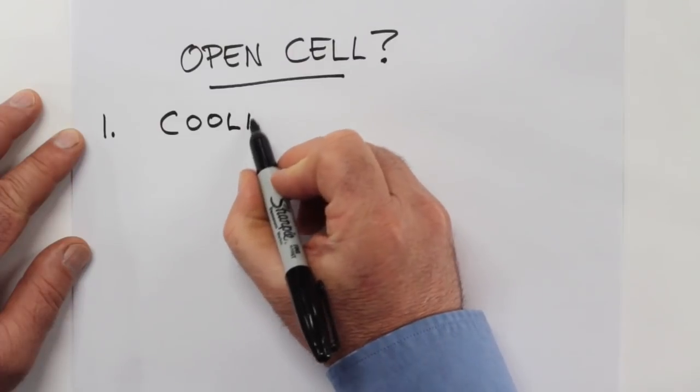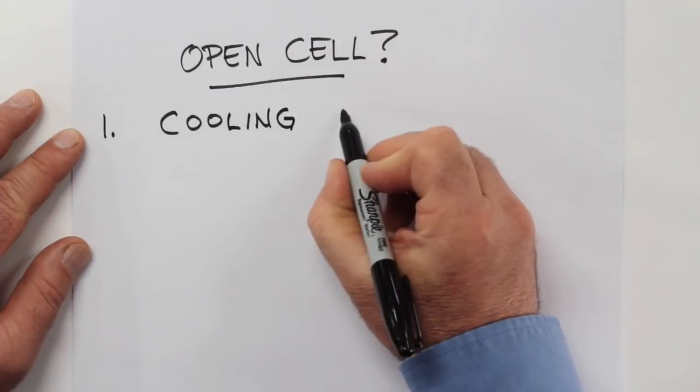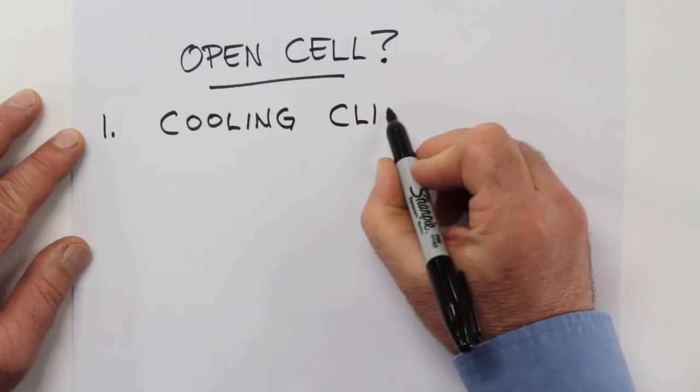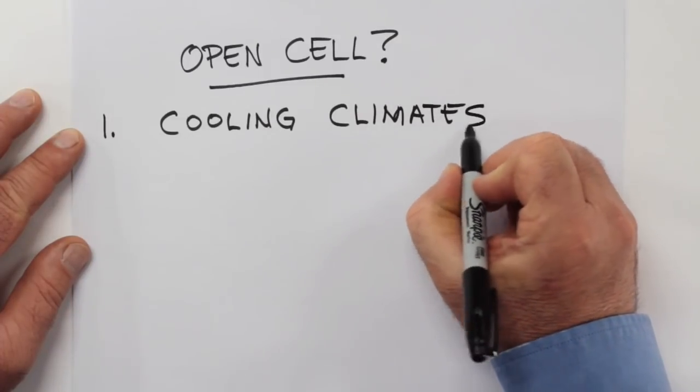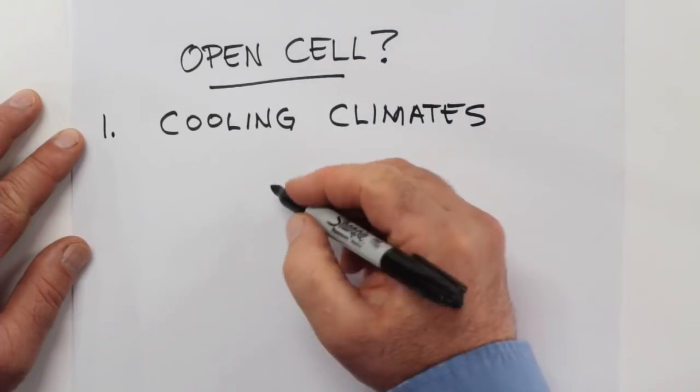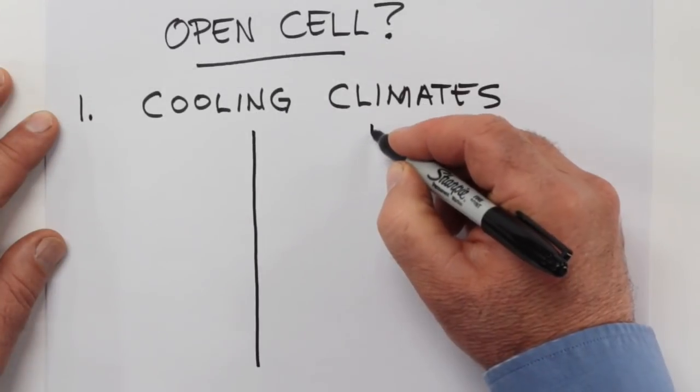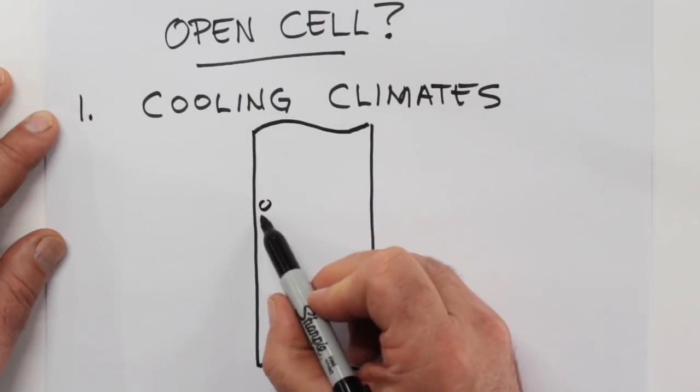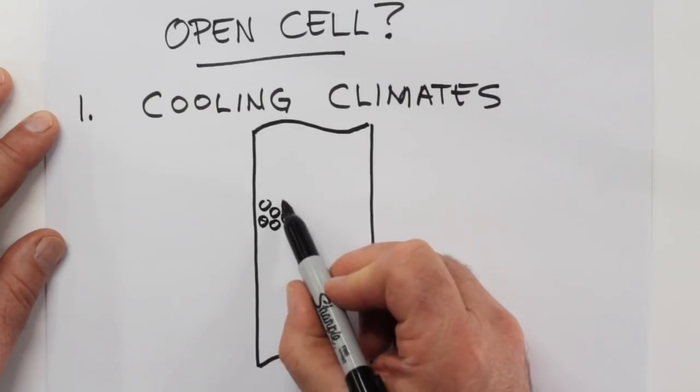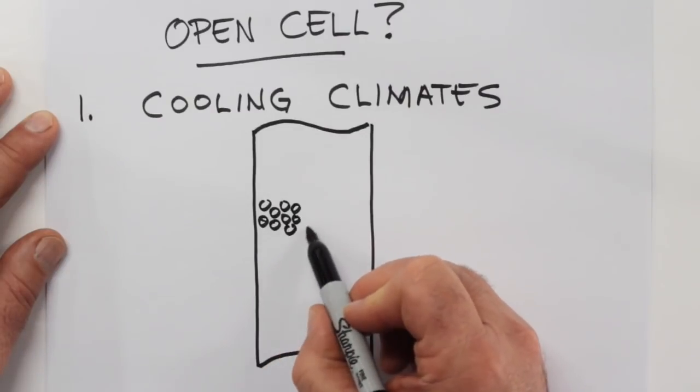Well, one place is in a cooling climate, so a climate where you're gonna have to cool down the inside of your house much more often and much more intensely than heating it. So once again, let's start with a cross-section of some kind of a framing structure. This could be a roof or a wall or anything that separates indoor space from outdoor space.